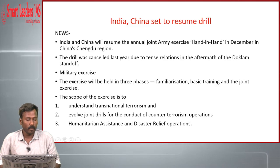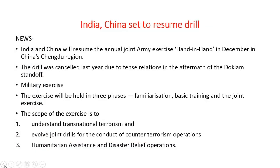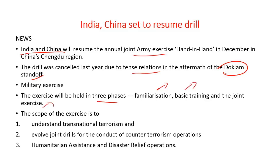The next topic is about the resumption of the Hand-in-Hand exercise between India and China. Hand-in-Hand is an annual joint army exercise between India and China. Due to tense relations after the Doklam crisis, the drill was cancelled last year, but now that relations have improved considerably, the countries have decided to resume the joint army exercise. The exercise will be held in three phases: the first phase is familiarization, the second is basic training, and the third is the joint exercise.